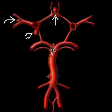Next type will be the ones arising from the internal carotid itself, so we have here the posterior communicating artery.